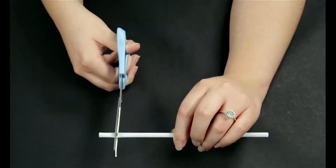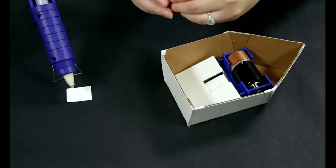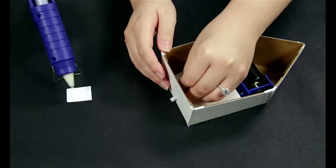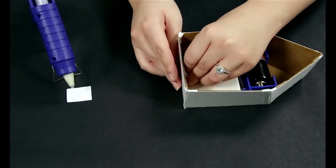Cut a small section of drinking straw. Insert the small section of straw into the hole in the back of the boat.